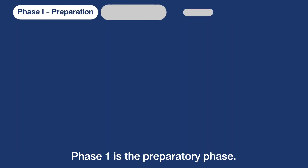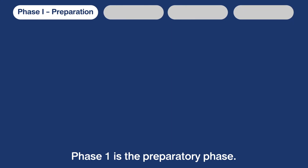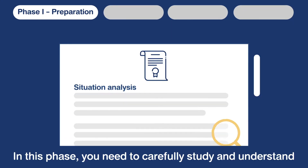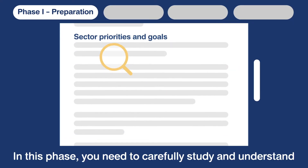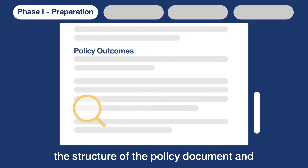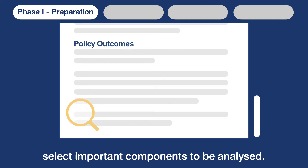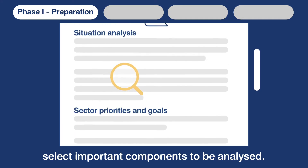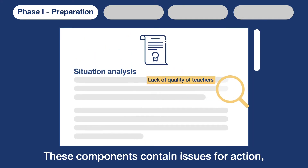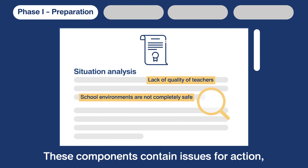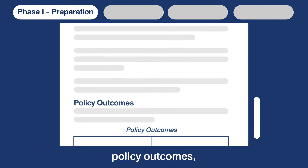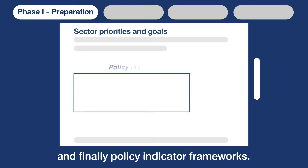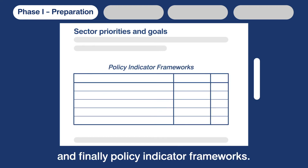Phase one is the preparatory phase. In this phase you need to carefully study and understand the structure of the policy document and select important components to be analyzed. These components contain issues for action, policy outcomes and finally policy indicator frameworks.